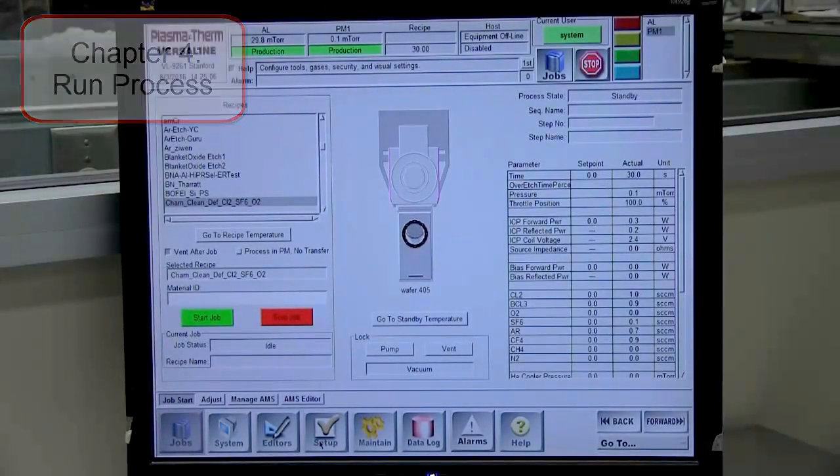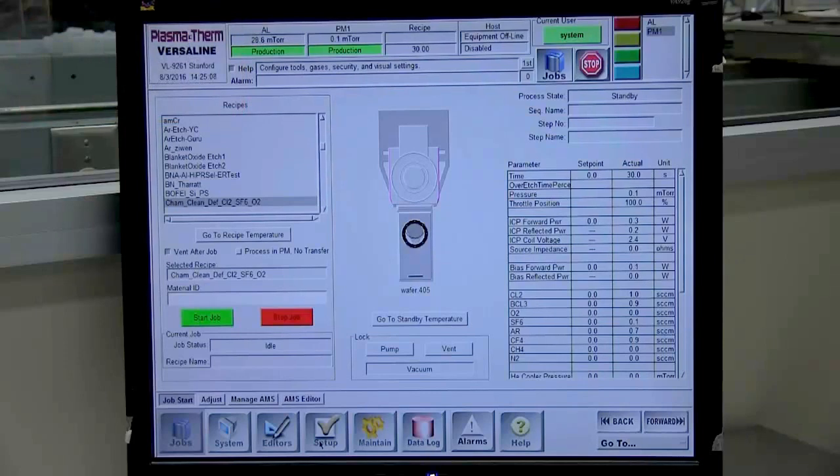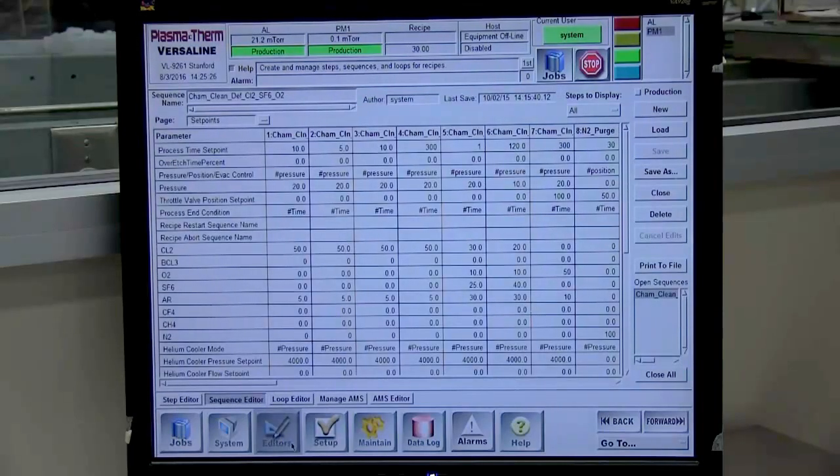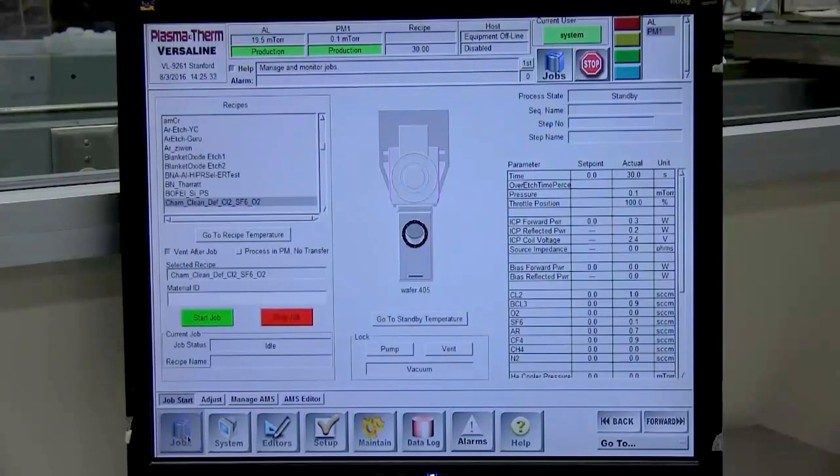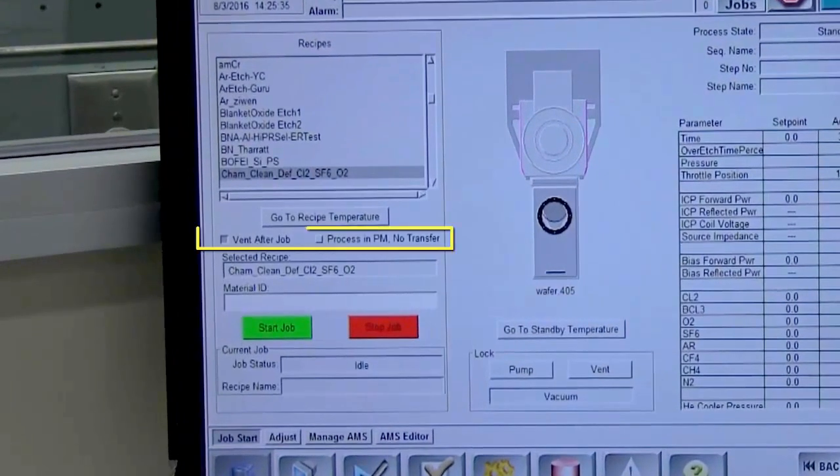In Job / Job Start, double check that the correct recipe has been selected from the recipes list. Make sure that the recipe sequence and recipe steps are correct and have the desired settings. Also make sure Process in PM No Transfer box is unchecked and Vent After Job is selected. Then click on the Start Job button to start the processing.